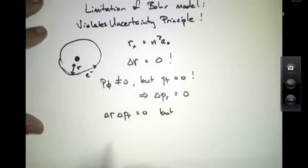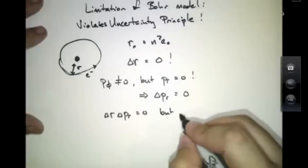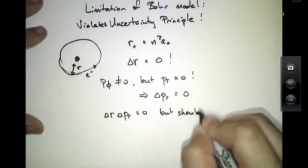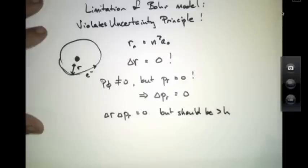And this gives us that delta R times delta P sub R is zero. But we should have that this product is greater than H.